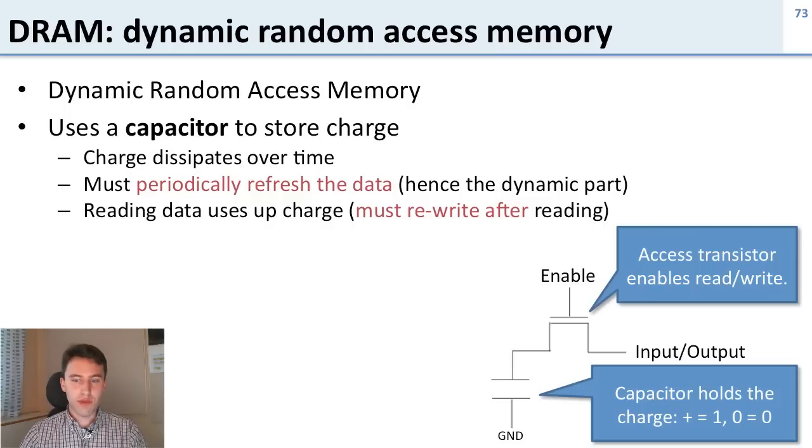Further, when you read from the capacitor you take all of the charge out of it to read, so after you read you destroy the value. After every read you have to write back again into the DRAM to put the value back. And this is why it's dynamic. It doesn't stay in one place the way a static one does. It changes over time.